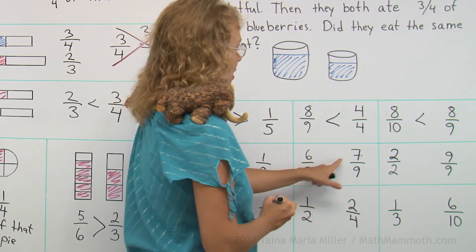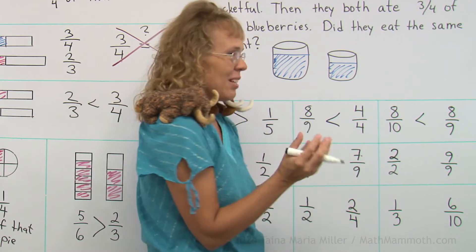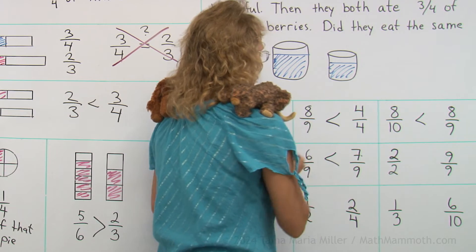Six-ninths, seven-ninths, that's easy again. Ninths and ninths, the same kinds of pieces. Seven pieces is more than six.